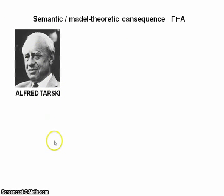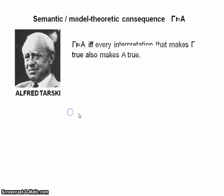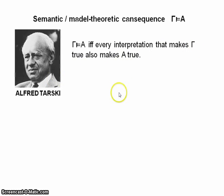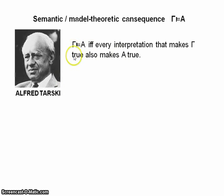The basic idea is that if we take some premises and a conclusion, then every interpretation that makes the premises true also makes the conclusion true. So A is a semantic consequence of gamma if and only if every interpretation that makes gamma true also makes A true. We're dealing with the absence of a counter-example. A counter-example is an interpretation that makes the premises gamma true but makes the conclusion A false. Semantic consequence obtains when every interpretation that makes gamma true also makes A true - that is, when there is no counter-example.